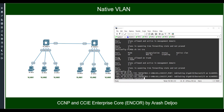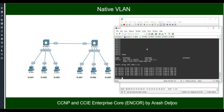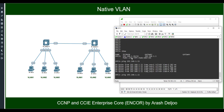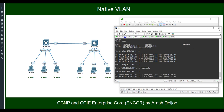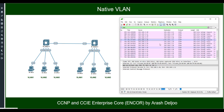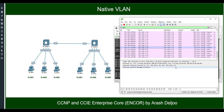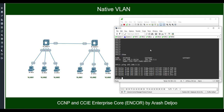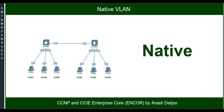With native VLAN changed to 2 on both sides, we now expect VLAN 2 traffic to have no tag, while VLAN 1 and VLAN 3 traffic will have tags. In the capture, sending from VPC1 to VPC4 (VLAN 1) now shows tag 1. Sending from VPC2 to VPC5 (VLAN 2) now shows no tag, because VLAN 2 is the new native VLAN. Traffic from VPC3 to VPC6 (VLAN 3) still shows tag 3. The native VLAN change is working as expected.